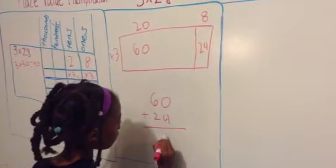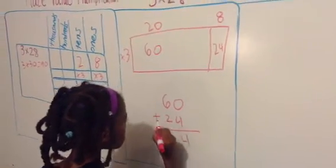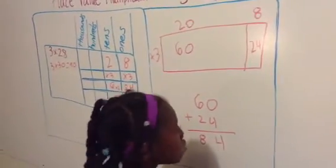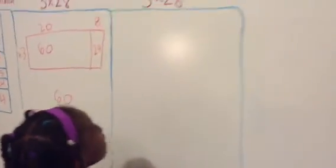Then we're going to add those two up. 4 plus 0 equals 4. 6 plus 2 equals 8, so our answer is 84, and I think that's close to 90, so I think our answer is correct.